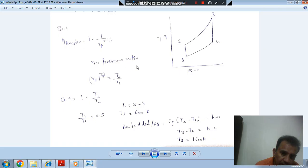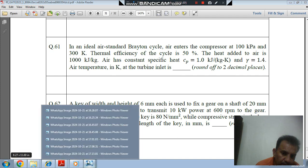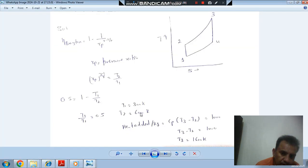So Rp = P2/P1, or (P2/P1)^((γ-1)/γ) = T2/T1. And this is given as 0.5, so T1/T2 = 0.5. T1 is 300 K since air is entering at 300 K, so T2 will be 600 K.